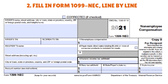Each box is clearly marked as to what you should enter. You have boxes one through seven. Box one tells the non-employee and the IRS the total of how much you've paid the individual during the tax year.